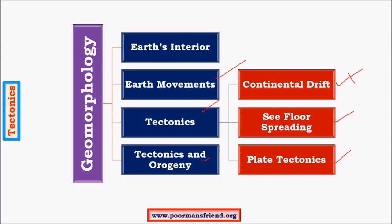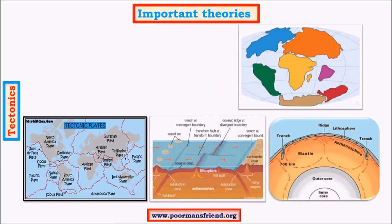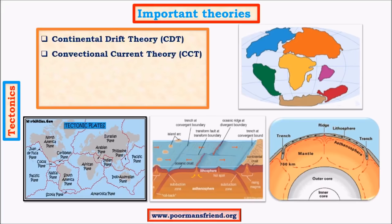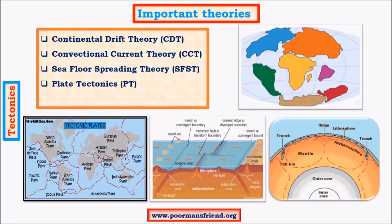In the next video we will cover tectonics and orogeny. The important theories related to tectonics are: continental drift theory, convectional current theory, seafloor spreading theory, plate tectonics, and polar wandering. Polar wandering is not entirely different from continental drift theory, whereas convection current theory forms the basis of seafloor spreading and plate tectonics.